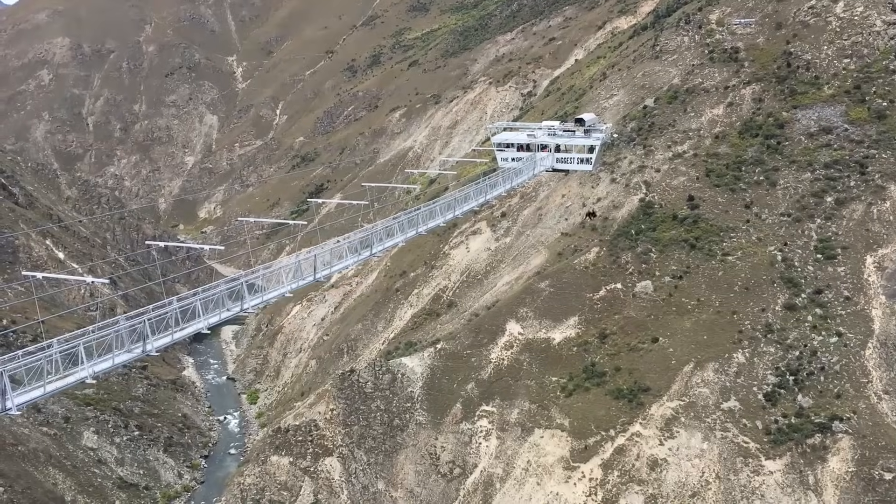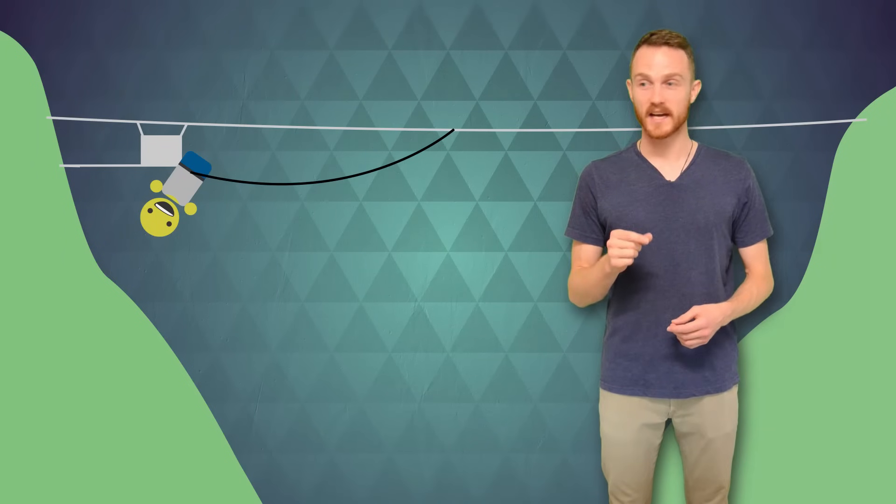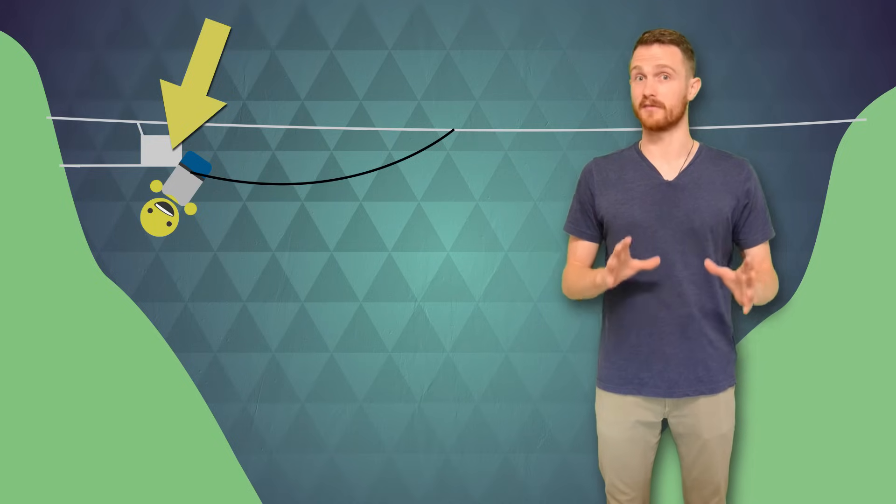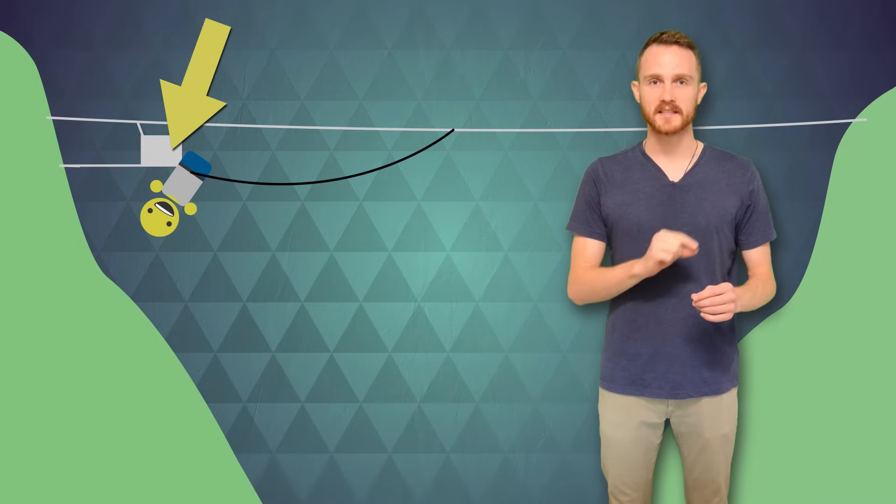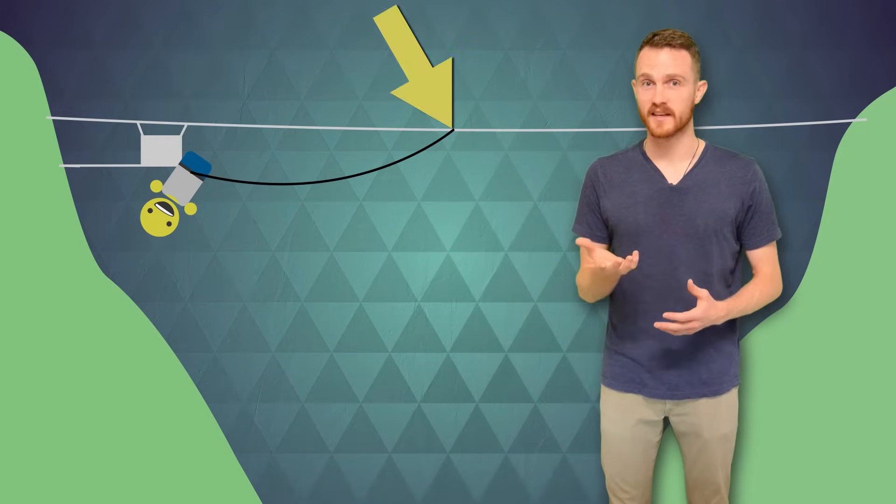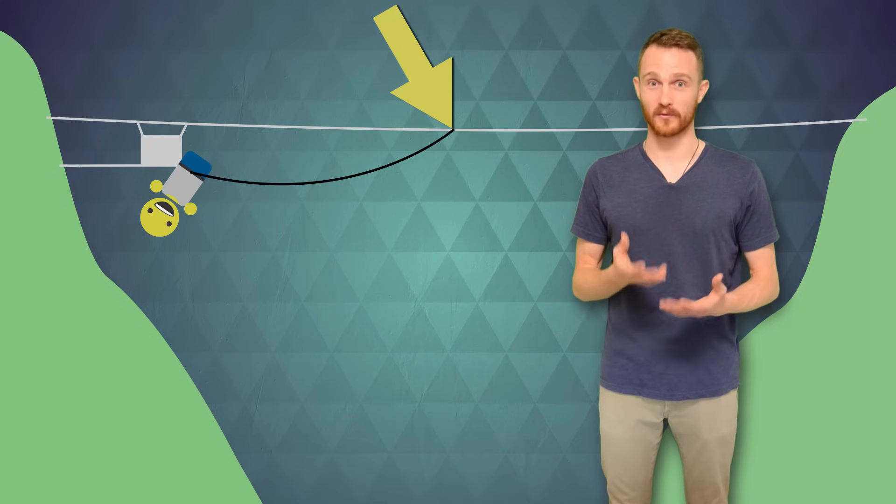This is me getting strapped into the world's largest swing. It's located in New Zealand, the country where I grew up. I'm hanging upside down at this platform above a big valley. The ropes are connected to a cable in the middle like this. Now you can guess what happens when they let me go, right?